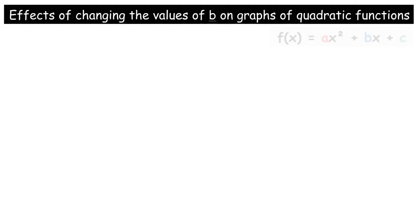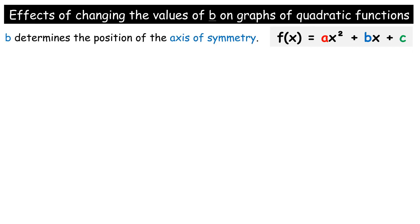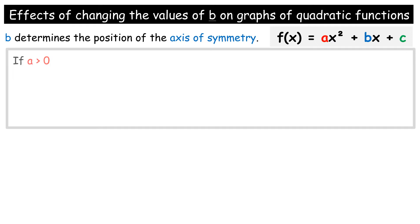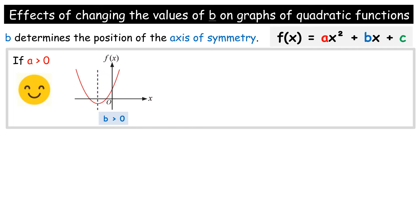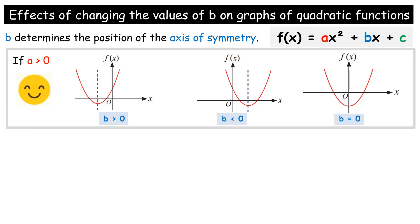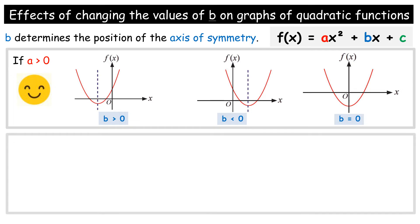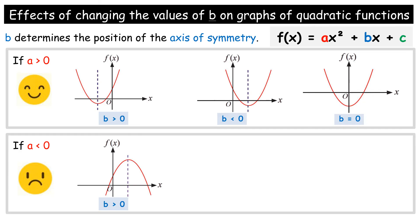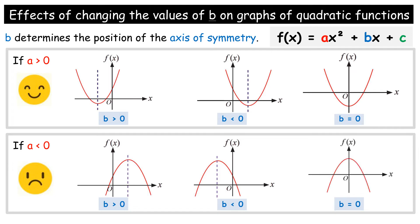The effects of changing the values of B on graphs of quadratic functions: the value of B determines the position of the axis of symmetry. If A is more than zero and B is more than zero, then the axis of symmetry lies on the left of the Y-axis. If A is more than zero and B is less than zero, then the axis of symmetry lies on the right of the Y-axis. If B equals zero, then the axis of symmetry is the Y-axis. Similarly, if A is less than zero and B is less than zero, the axis of symmetry lies on the right; if A is less than zero and B is more than zero, it lies on the left.